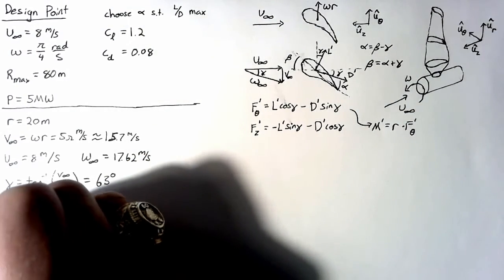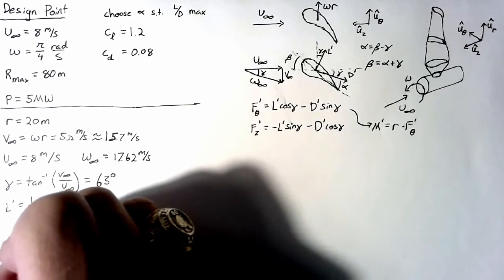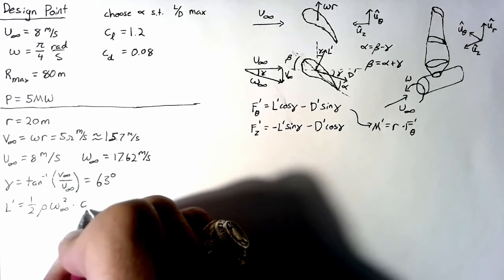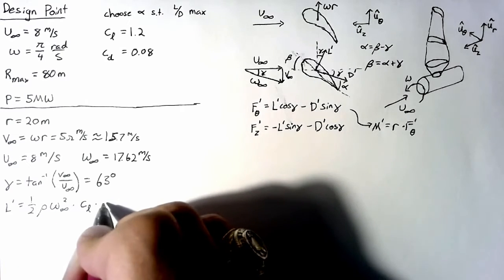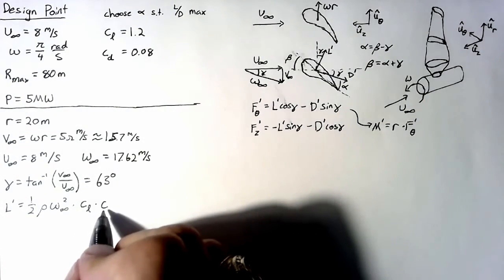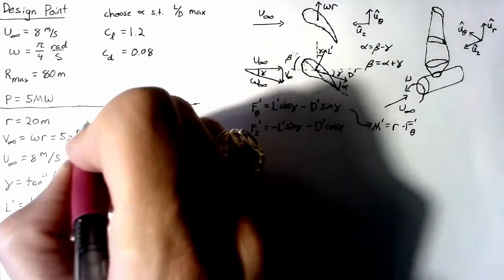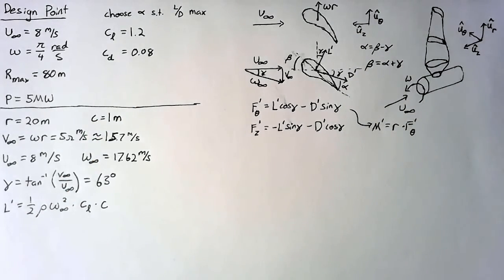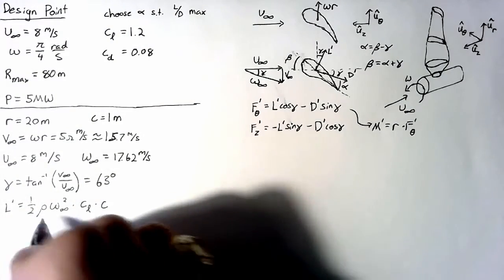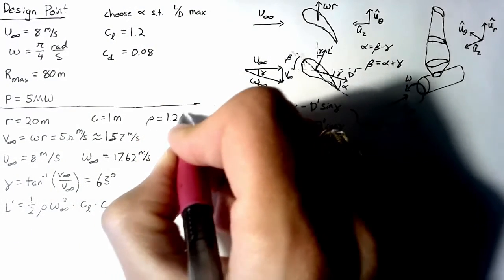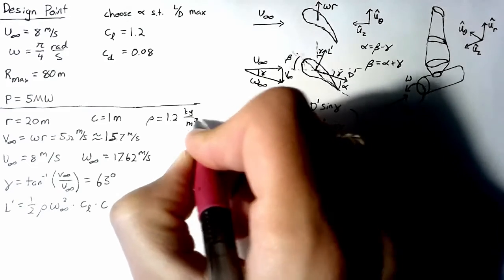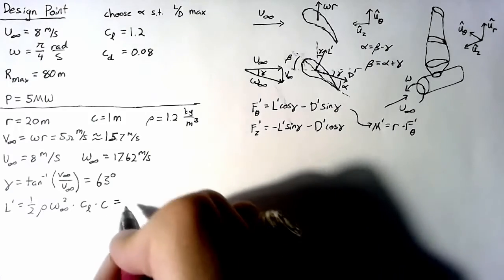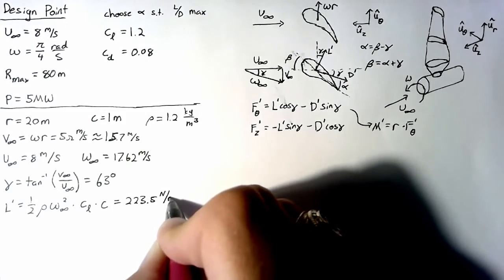So now we can calculate L prime, and this is one-half rho W infinity squared, multiplied by our section lift coefficient, multiplied by the chord. So we're going to have to assume a chord length here as well, and this will be one of our design points. I'm just going to set it to one meter for now, and we can go back and play around with that later. I'm going to say that rho is equal to 1.2 kilograms per meters cubed, which is about right. Plugging everything in, we end up with 223.5 newtons per meter.